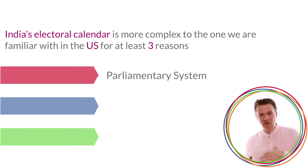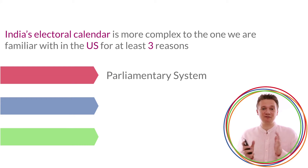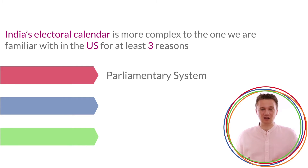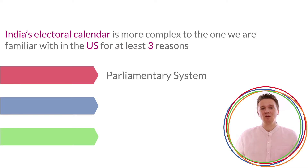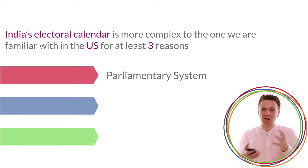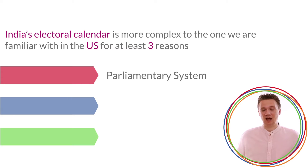India's electoral calendar is more complex than the one we are familiar with in the US for at least three reasons. Firstly, India's parliamentary system, as opposed to the American presidential system, doesn't have fixed terms of office. There is a maximum term limit of five years, but if the Prime Minister chooses to, or if the opposition successfully calls a vote of no confidence, then an election can happen at any time, and some governments in India have only survived for a few months.